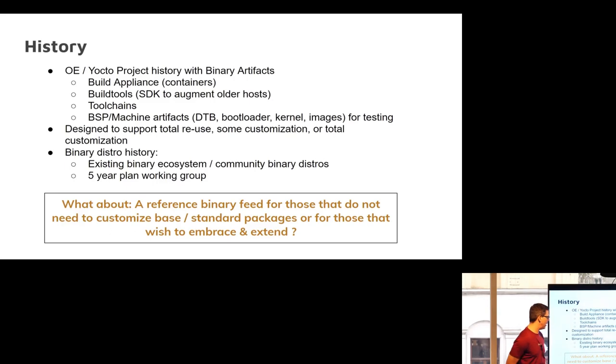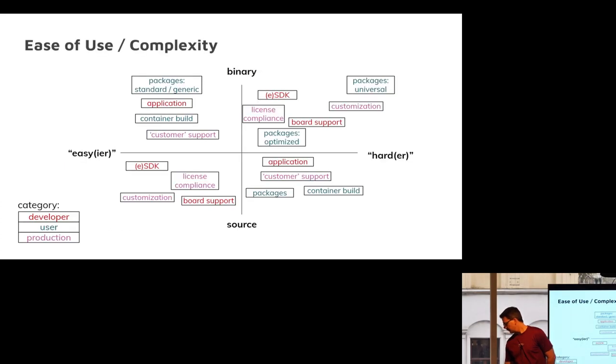Around the binary distro history, I led the five-year plan working group around binary distributions. We had a bunch of meetings and inevitably there weren't enough people available to do the work, so it kind of sat. Now we have the latest effort, reusing some of the concepts in the latest things. What about a reference binary feed for those that do not need to customize the base or standard packages or for those that just want to embrace and extend? There are a whole bunch of people whose first interface doesn't want to be building from source with BitBake. Shocking as it is.